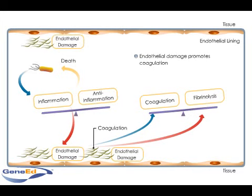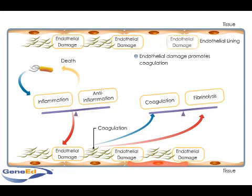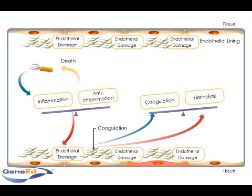As the body tries to return to a normal state, the endogenous modulators of homeostasis are consumed, and their levels become low. In parallel, the endothelial damage promotes further inflammation. Left unopposed, the endothelial damage accumulates, and in turn, so does coagulation.